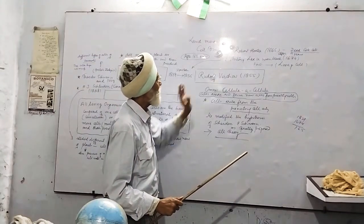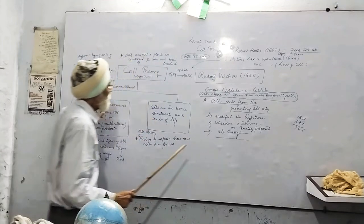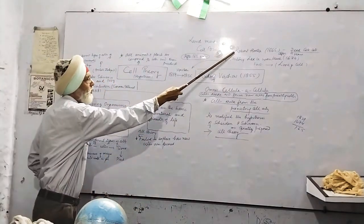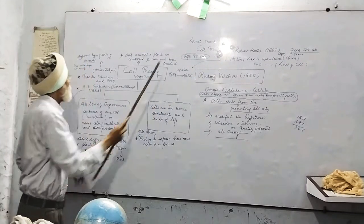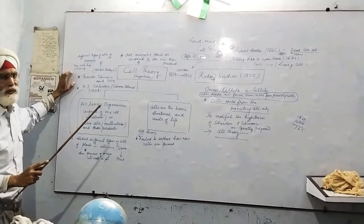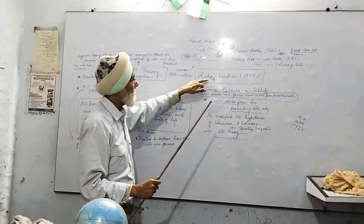Now, after these two scientists, after these two scientists, number one Robert Hooke, and two is Antonio van Leeuwenhoek, and third is your Schleiden, and fourth one is Schwann. These are the four scientists. Now, the fifth member comes in action. That is the Rudolf Virchow.